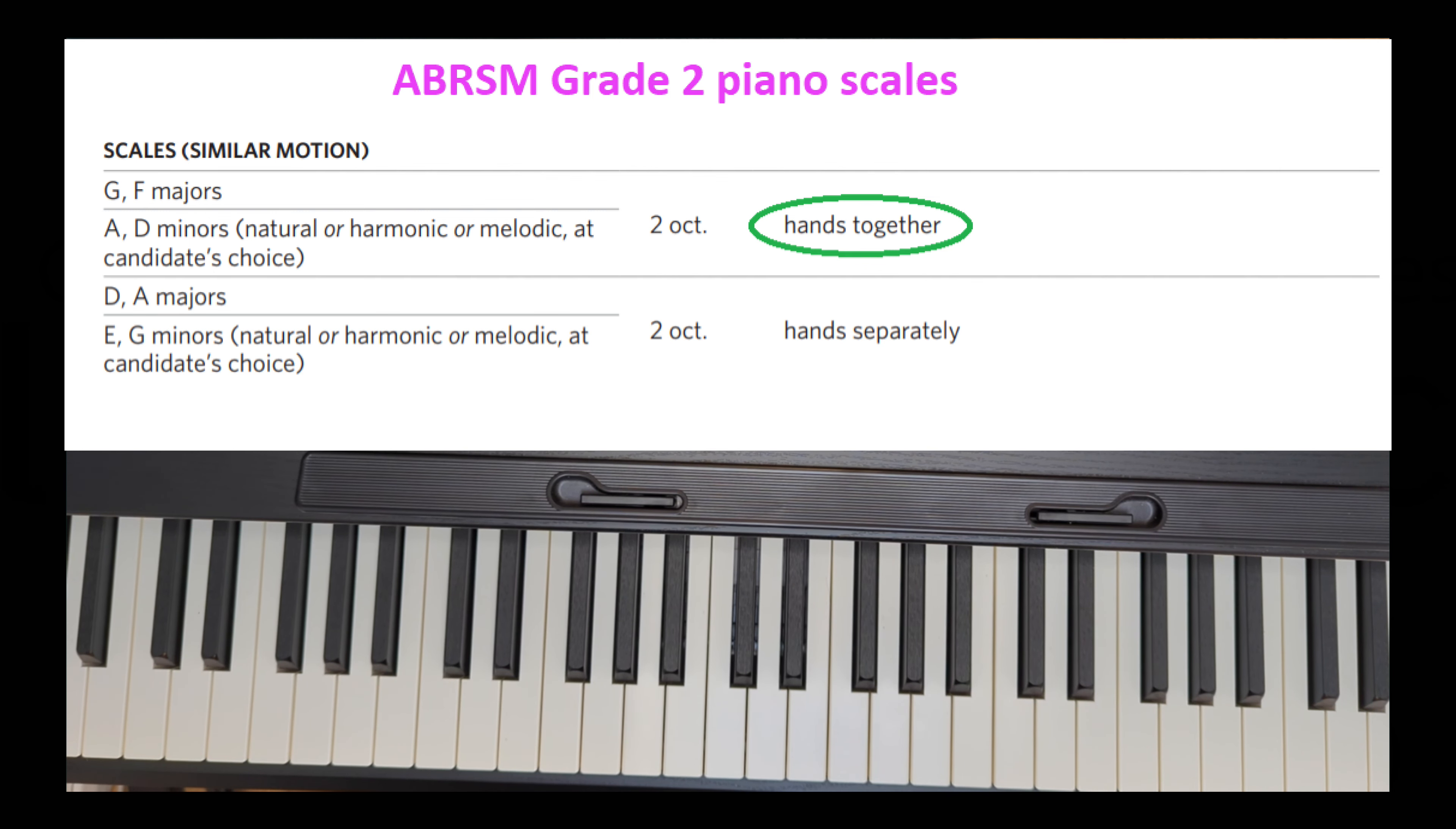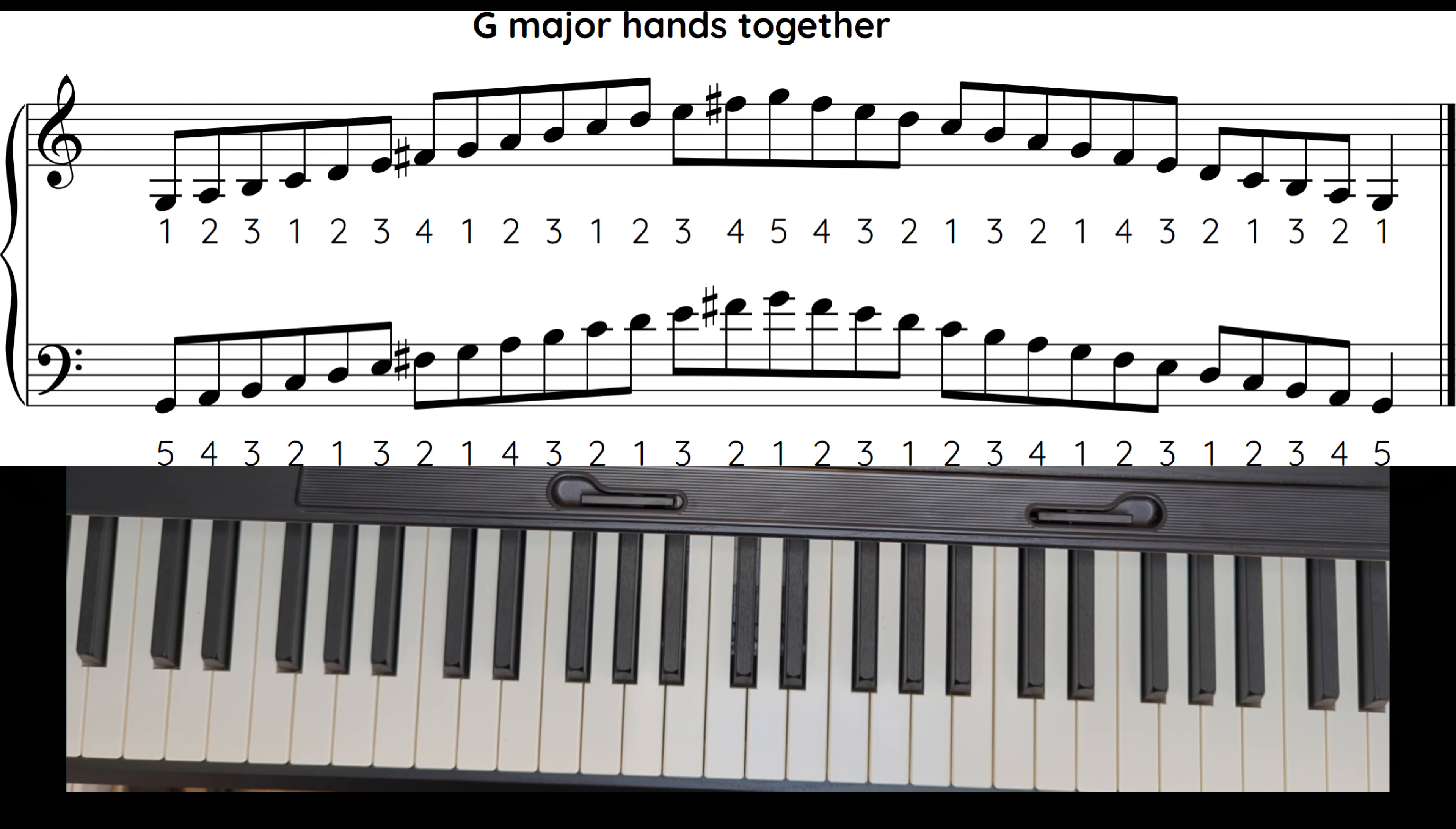Well let's start at the beginning, G major. This was done in Grade 1 with just one hand, now it's hands together. So to remind you of the fingering of each hand: G major 1, 2, 3 with the right hand, then get your thumb under, get ready for the F sharp with finger 4, and then start your second octave.